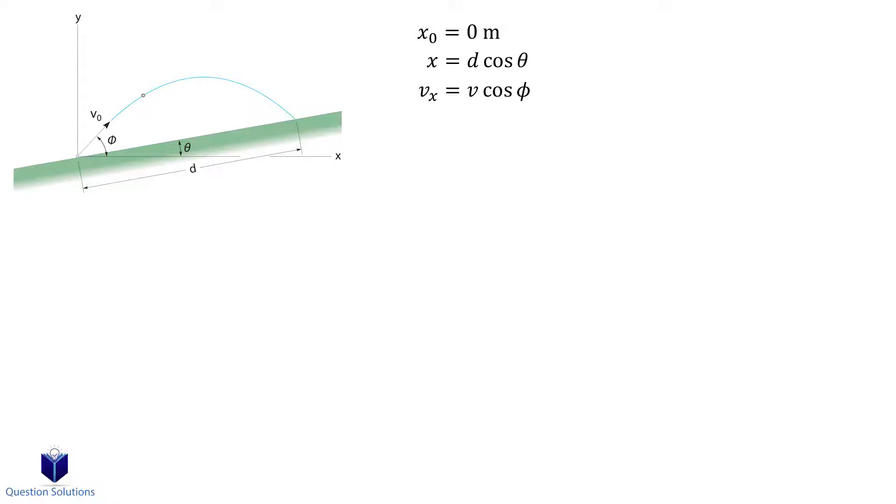For the vertical direction, we have the starting location at y equals 0 meters, the ending location is d sin theta, and the velocity is v sin phi. Let's not forget acceleration, which is negative g.